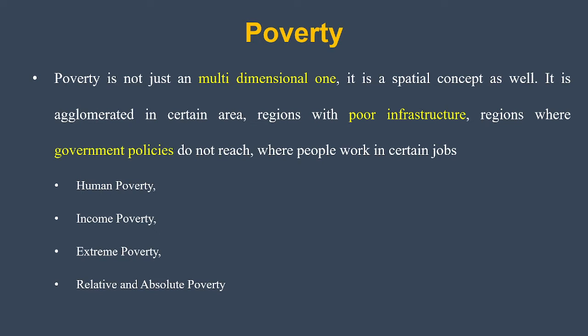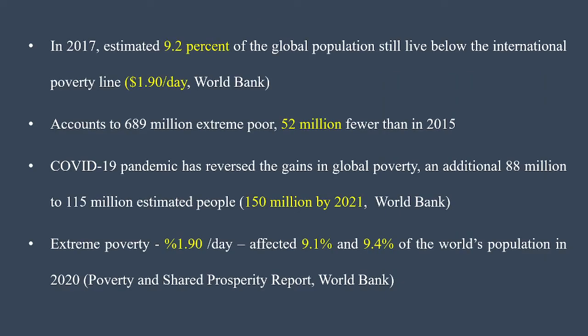Income poverty is similar but refers to the lack of income to meet consumption needs of households. Extreme poverty is defined based on the World Bank's threshold of $1.90 per day — if a person is unable to earn $1.90 per day, they are considered to be below the poverty line. These are the basic definitions followed in poverty analysis.